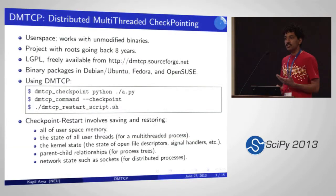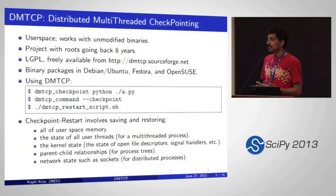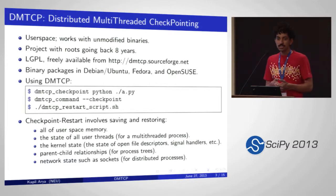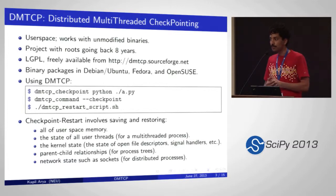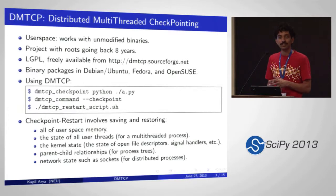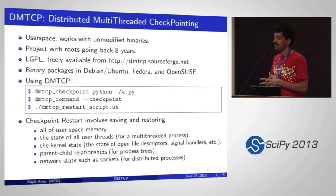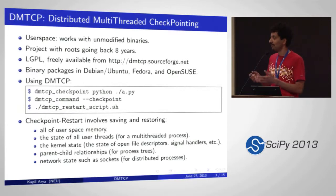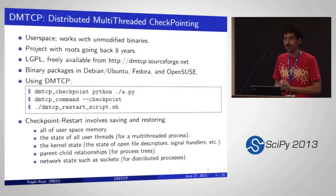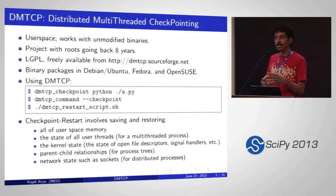DMTCP works on multi-threaded applications, multi-processes. You can checkpoint a computation running on a cluster, and a whole bunch of other things. You can also checkpoint things like MATLAB and R, and obviously Python, Perl, and all sorts of environments, as long as they do not require root privilege to run.